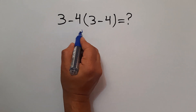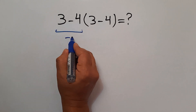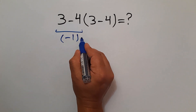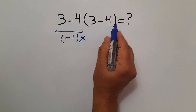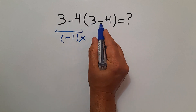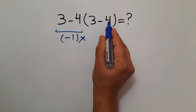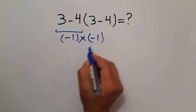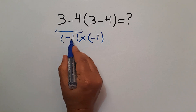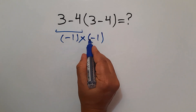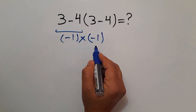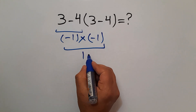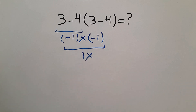3 minus 4 equals negative 1. So negative 1 times these parentheses, 3 minus 4, again equals negative 1. So negative 1 times negative 1 equals just 1. But this answer is not correct.